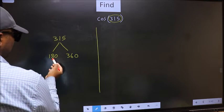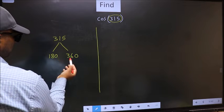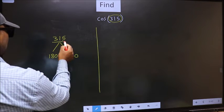This is 180 × 1, this is 180 × 2. Between these two numbers, 315 lies.